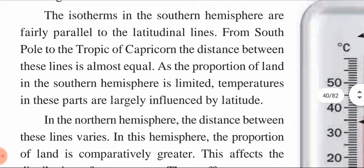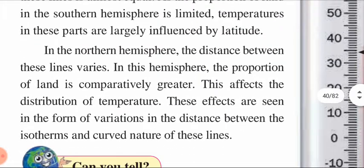The isotherms in the southern hemisphere are fairly parallel to the latitude lines. From the south pole to the Tropic of Capricorn, the distance between these lines is also equal. Temperatures in these parts are largely influenced by latitude. In the northern hemisphere, the distance between these lines varies. The proportion of land is comparatively greater, which affects the distribution of temperature — seen in the form of variations in distance between the isotherms and the curved nature of these lines.